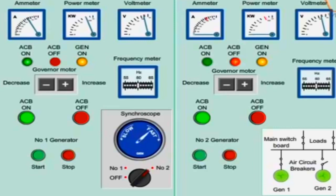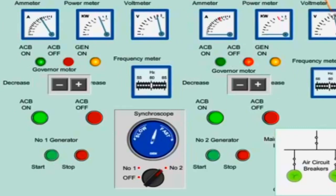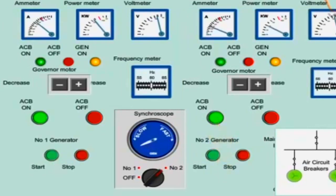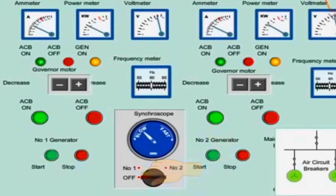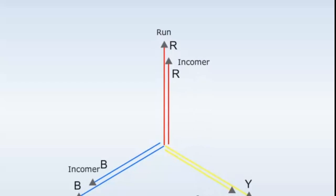The actual synchronism between the two generators is indicated by the twelve o'clock position on the synchroscope. Close the air circuit breaker when the needle reaches the 11 o'clock position, taking into account the breaker closing time.